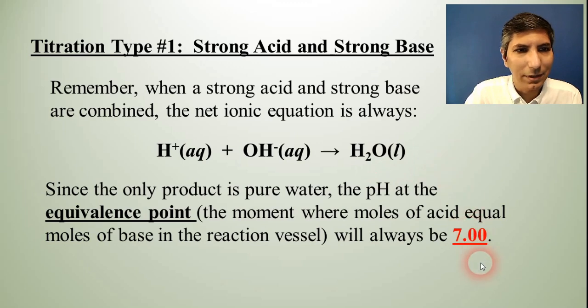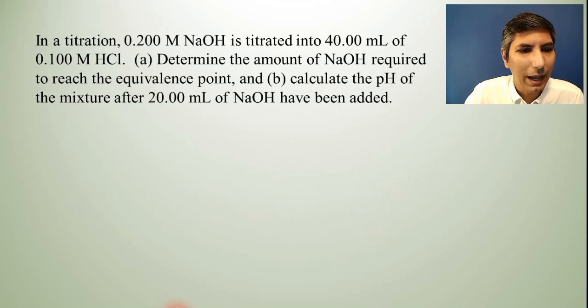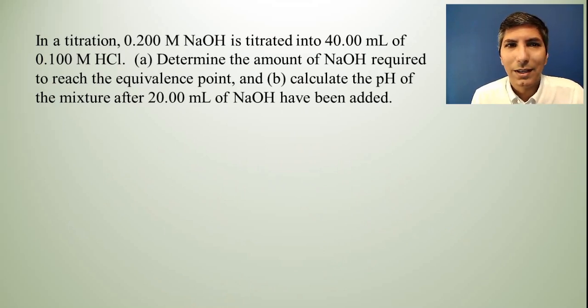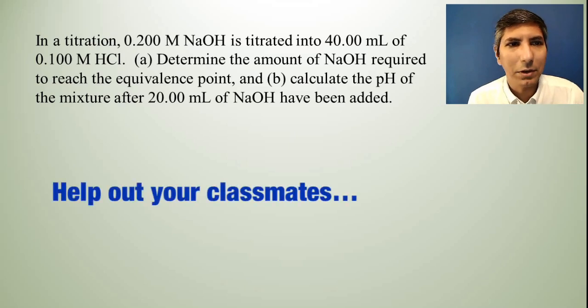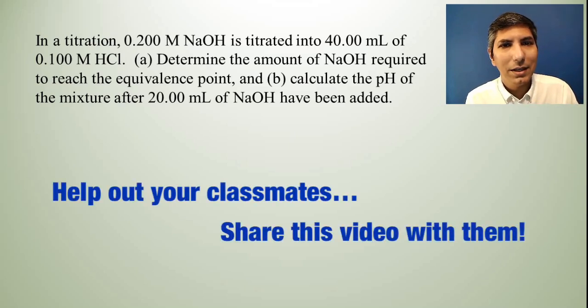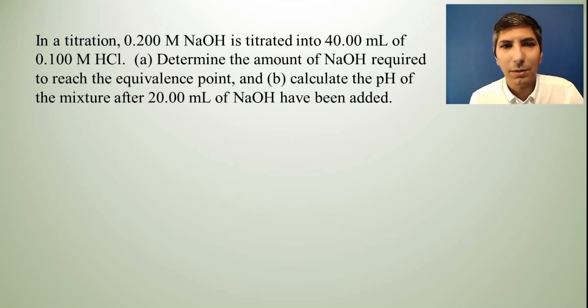Now let's take a look at this problem right here. It says that in a titration, 0.200 molar sodium hydroxide is titrated into 40 milliliters of 0.100 molar HCl, hydrochloric acid. Determine the amount of sodium hydroxide required to reach the equivalence point and calculate the pH of the mixture after 20 milliliters of sodium hydroxide have been added.